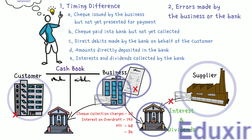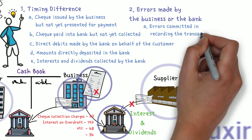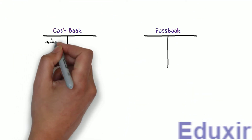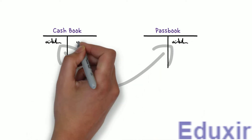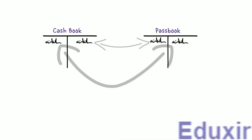Now coming to errors made by the business or the bank: one error could be due to omission or wrong recording of transactions related to checks issued, checks deposited, or wrong totalling committed by the firm while recording entries in the cashbook. Also, it is important to note that when there is any debit entry in the business cashbook, the corresponding entry in the bank passbook would be on the credit side, and vice versa.